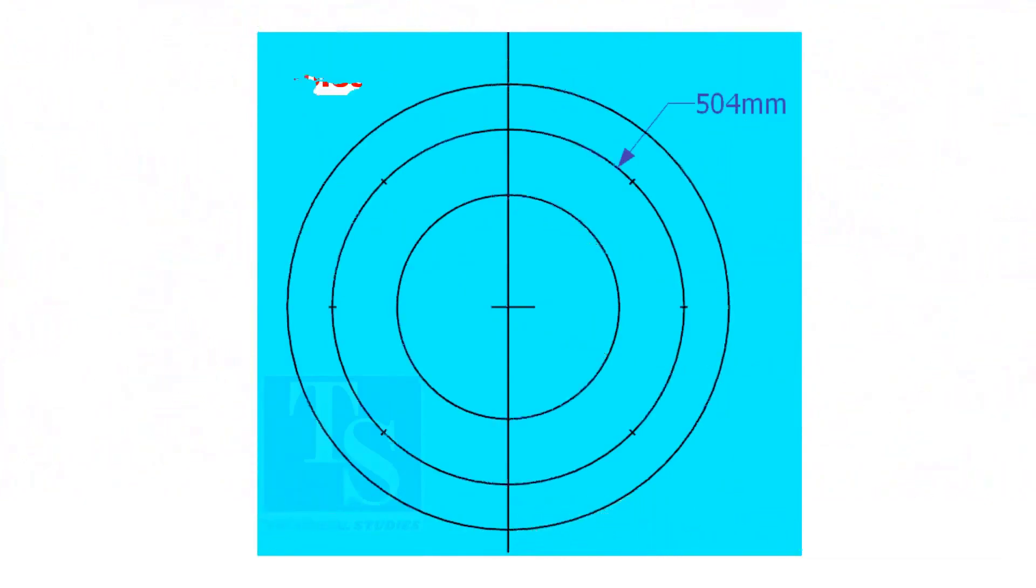Since the number of the holes is 8, divide the PCD into 8 equal parts. To divide the circle easily and accurately, let us find the cord length of the holes.